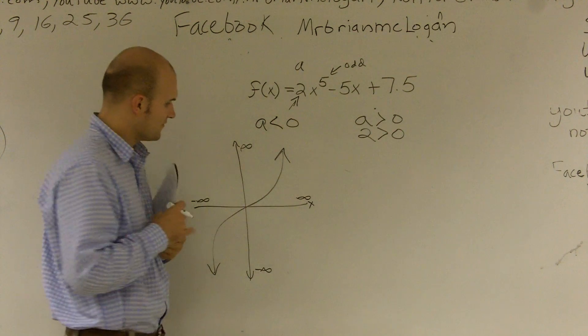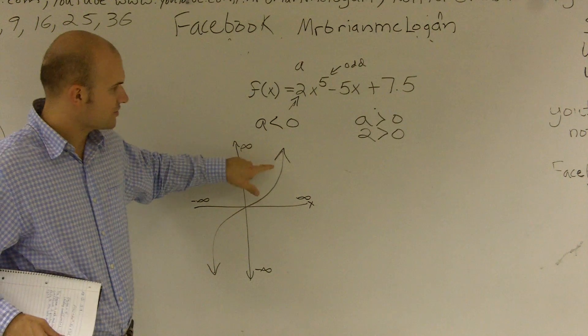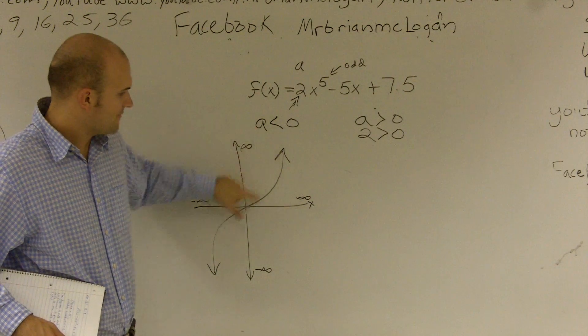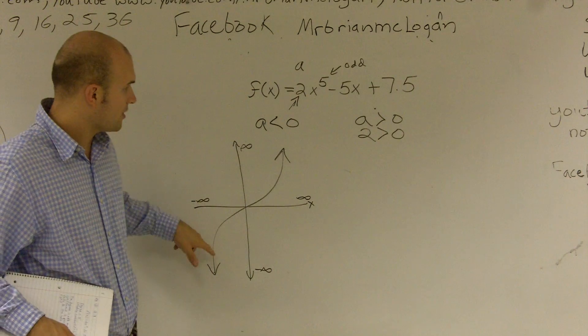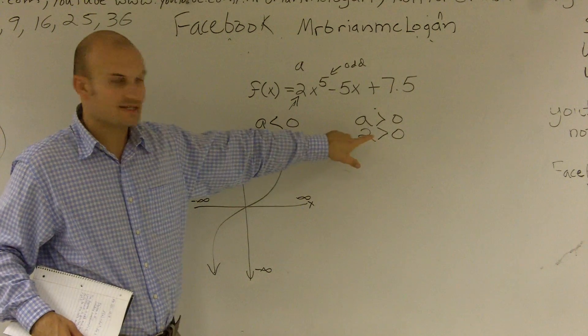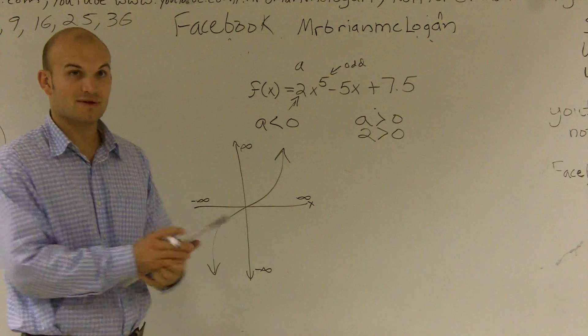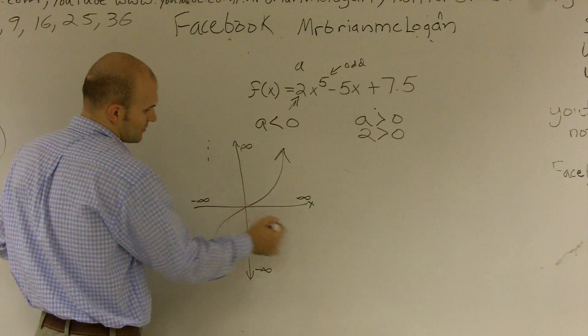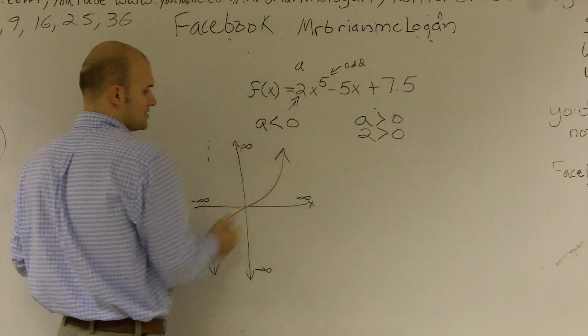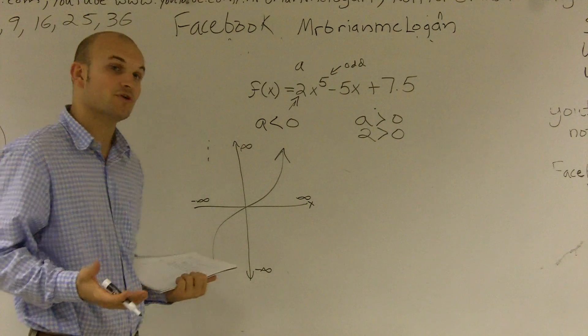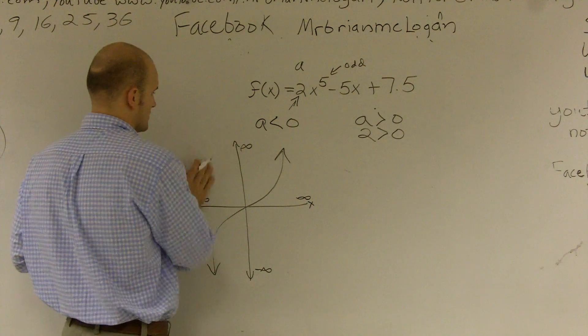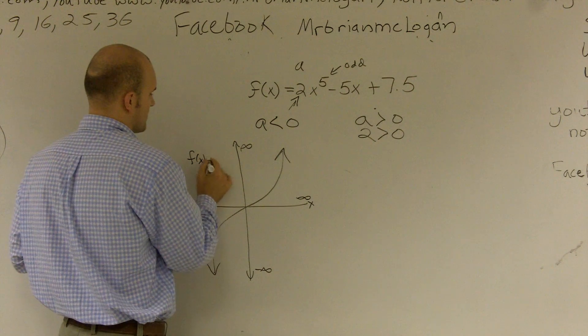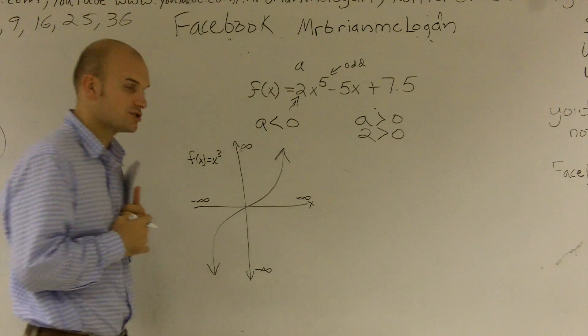So I know that, first of all, that's going to look like this. So an odd function is going to be in this form. And whenever it's greater than 0, it's going to look like this. If it was negative, if it was less than 0, then it would look like that. But since a is greater than 0, it's going to give you my original parent function, which this is f(x) = x^3, just so you guys know.